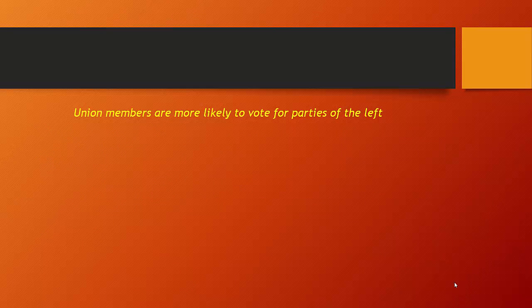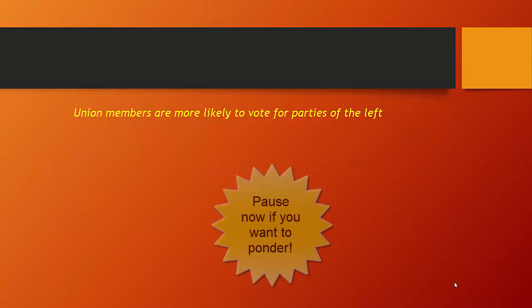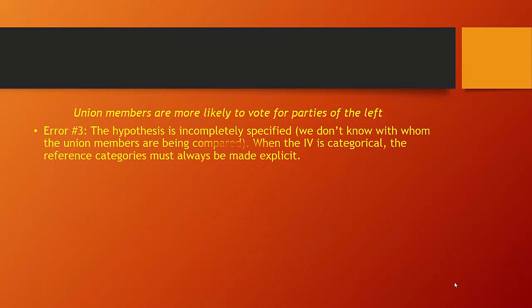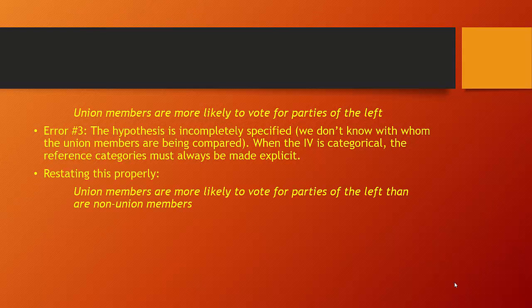How about this one: 'Union members are more likely to vote for parties of the left.' If you guessed that it was incompletely specified — we don't know with whom union members are being compared — you are correct. When the independent variable is categorical, we need to put all of the reference categories of our independent variable in our hypothesis so we understand the comparison being made. So restating this properly, we might say union members are more likely to vote for parties of the left than non-union members.